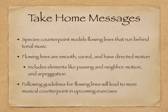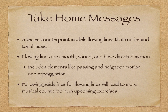Here are the take-home messages from this video. We learned that species counterpoint models flowing lines that are the basis for tonal music. Lines that flow are smooth, varied, and have directed motion. These lines include elements like passing and neighbor motion and arpeggiation. Following the guidelines for flowing lines will lead to more musical counterpoint and to your success in upcoming exercises with more difficult species.